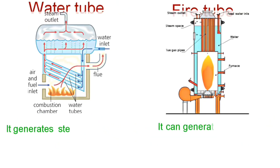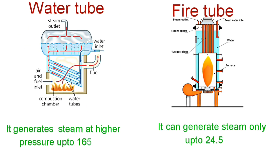In case of a water tube boiler, it can generate steam at a higher pressure up to 165 bar, whereas in case of a fire tube boiler it can generate steam only up to 24.5 bar.